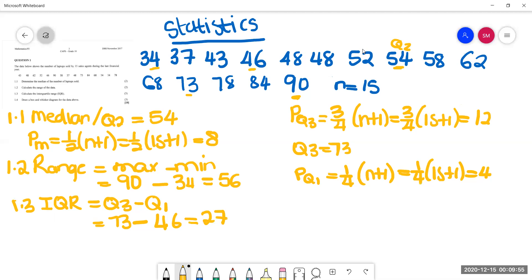All of this information is known as the five number summary. This is what we need to draw the box and whisker diagram given the data below.